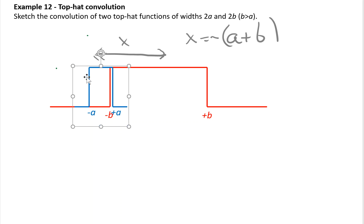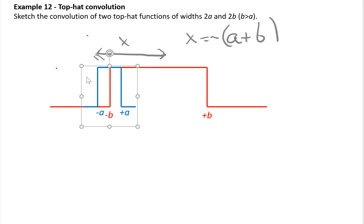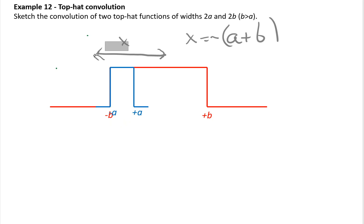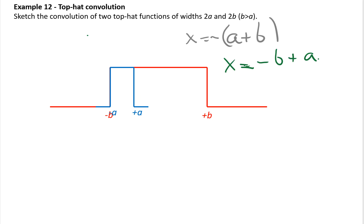As we continue to increase x, the overlap starts to increase in a linear fashion as the blue function moves further to the right. The convolution value for a given x is just the amount of overlap. The overlap reaches a maximum after we've shifted the blue function an additional distance of its own width, 2a, to the right. At that point x equals minus b minus a plus 2a, which gives minus b plus a.